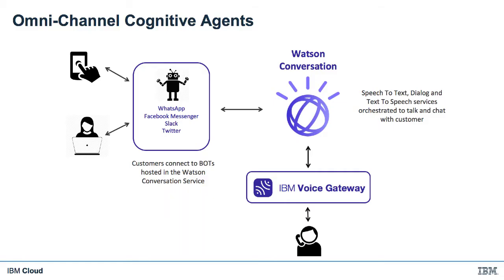We've seen how Watson conversation is really the heart of the solution here, and it's easy to imagine these conversations becoming very complex and requiring a lot of training to handle very complex customer interactions. But we can share the same conversation assets across different channels. If we've already invested the time to train a Watson conversation to handle conversations over chatbots, we can reuse the same conversation assets with Voice Gateway, and vice versa.